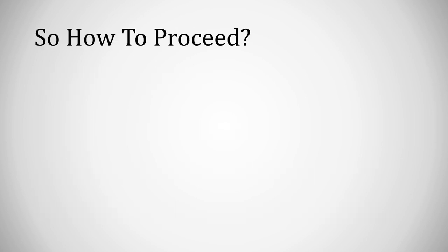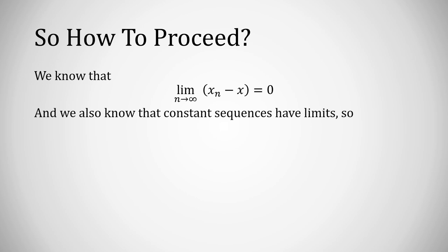So how do you fix this error? We know that the limit as n approaches infinity of xn minus x is 0. And we also know that constant sequences have limits. So if I took the constant x and took its limit, that would just be x. Now I have two sequences that I know have limits. xn minus x converges to 0, and x converges to x.